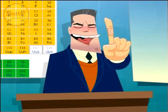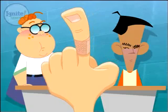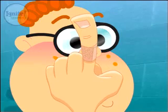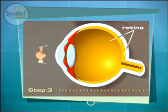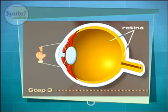However, when you look at objects that are up close, the lens has to adjust to the scattered light rays. The ciliary body contracts, which forces the lens to become rounded in order to focus on the retina.